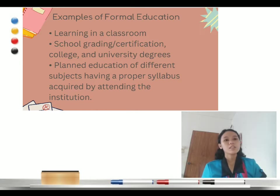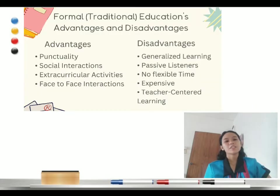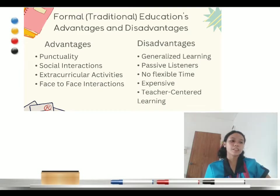Here are the examples of formal education: learning in school, school grading or certification, college and university degrees, planned education of different subjects, having a proper syllabus acquired by attending the institution. These are the advantages and disadvantages of formal education. Under the advantages, there is eventuality, social interactions, extracurricular activities, and face-to-face interactions.